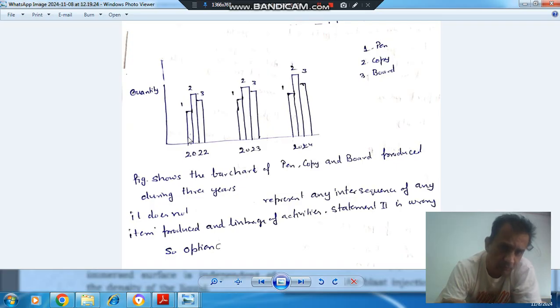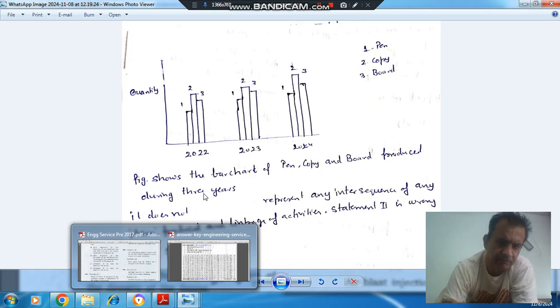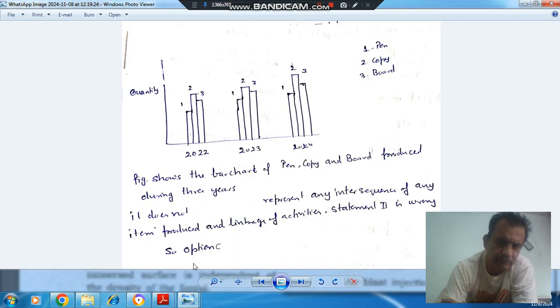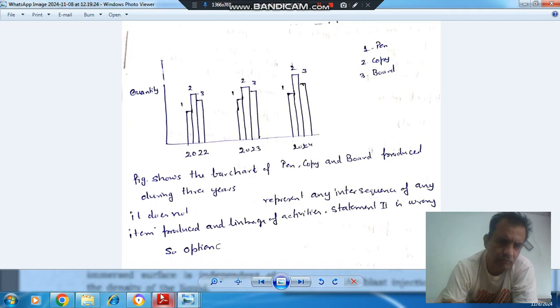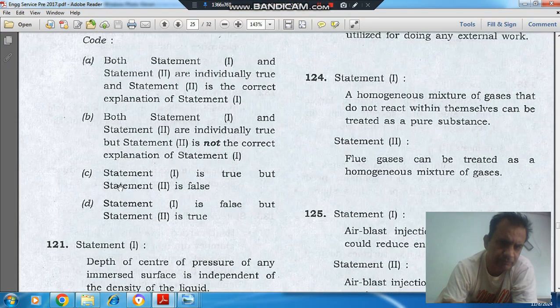So statement 2 is wrong and statement 1 is true. It tells the planned performance, so statement 1 is true. So the answer is option C. The answer is option C: statement 1 is true and statement 2 is false.